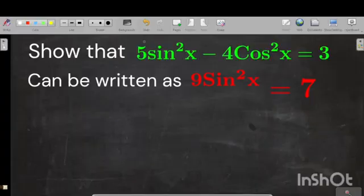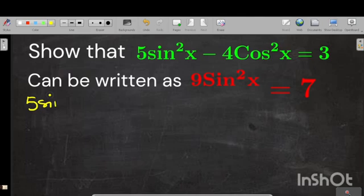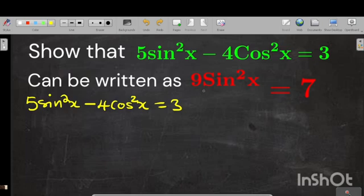Alright, first of all, let's rewrite this first equation. So we have 5 sin squared x minus 4 cos squared x is equal to 3. The final answer should only have sin squared and not cos.